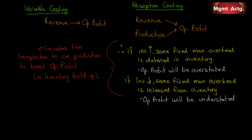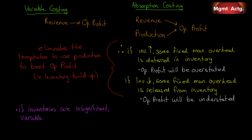So no inventory buildups due to trying to make numbers — you might have an inventory buildup for some other reason; a sales forecast may just be completely wrong — take BlackBerry, for instance. Now, if inventories are insignificant, variable costing offers little value. And since more and more companies are moving towards just-in-time inventory management methods and lean production, variable costing is seen as a lot of extra work for very little. And if your inventories don't fluctuate a lot from period to period, again, variable costing offers little value.